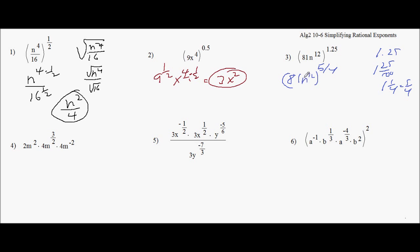Okay, I'm going to take 81 to the 5 fourths, and then n to the 12th, 12 over 1 times 5 over 4. Well, I know the fourth root of 81 is 3. So I get 3 to the 5th. Because I take the fourth root. This is really fourth root of 81 to the 5th power. The fourth root is 3, 3 to the 5th.